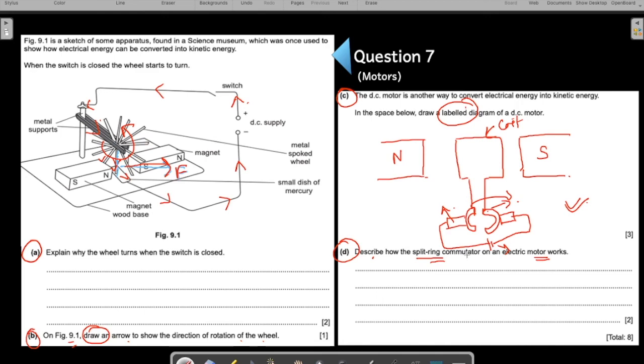So how does the split ring commutator work? It reverses the direction of the current after every half a cycle so that the arm of the coil which is nearer to the pole always carries the current in the same direction. It always experiences the force in the same direction. The rotation always continues smoothly in the same direction.